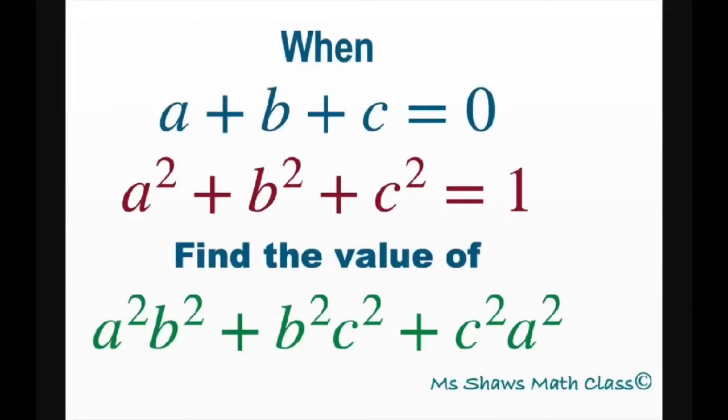Hi everyone, when a plus b plus c equals zero and a squared plus b squared plus c squared equals one, we're going to find the value of a squared times b squared plus b squared times c squared plus c squared times a squared.